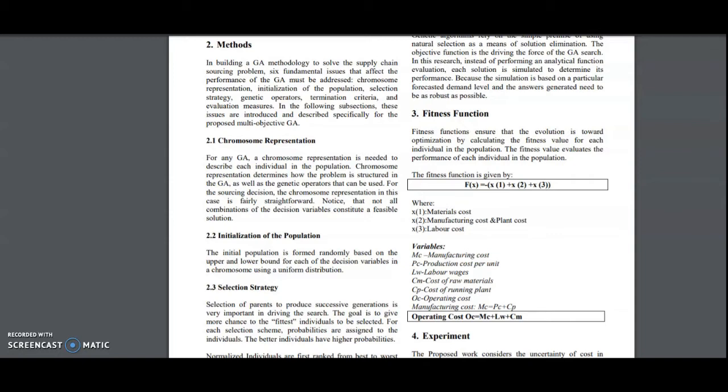In chromosome representation, the chromosome is determined by the problem as well as how many genetic operators we are going to use. What we are going to do is we have to create a chromosome of uncertainty factors and then we form a chromosome.